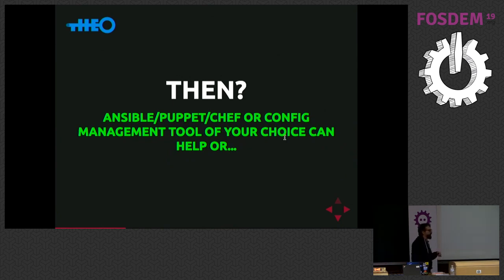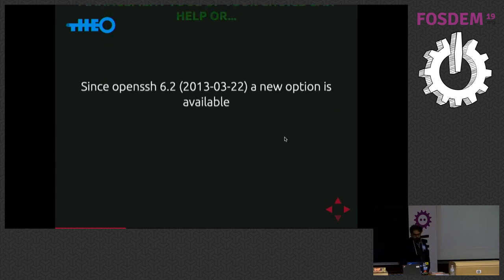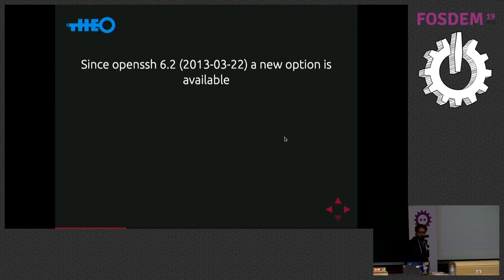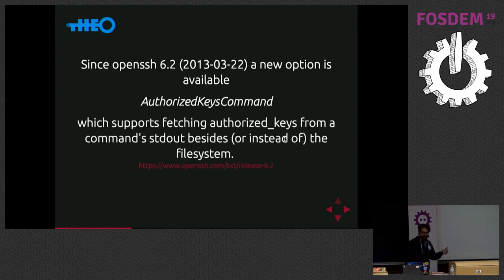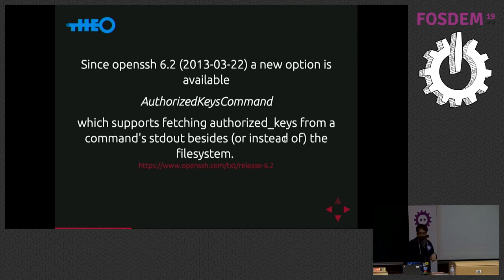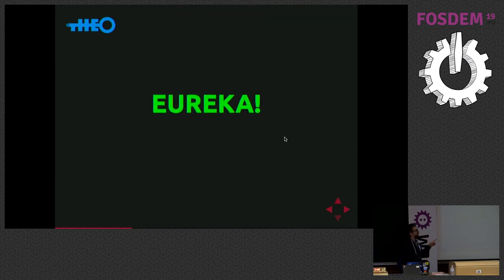We can rely on configuration management — Ansible, Puppet, Chef, or whatever you can choose. Or since OpenSSH 6.2, which is quite old — about five years old — a new option is available: it's called AuthorizedKeysCommand. How many of you know this option? AuthorizedKeysCommand supports fetching authorized keys from a command's standard output, beside or instead of the file system.